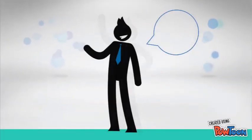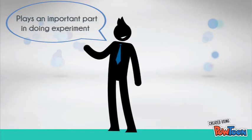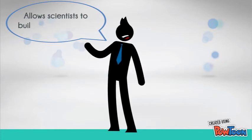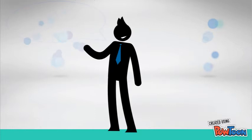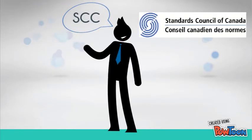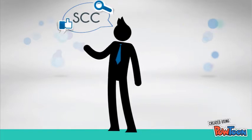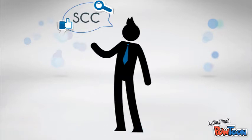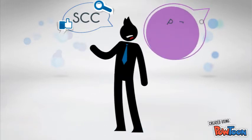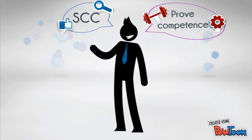Good laboratory practice plays an important part in doing experiments. It allows scientists to build a good report within the scientific community. The SCC, Standards Council of Canada, is the only monitoring authority in Canada that recognizes good practice and gives accreditation to scientists. Having been certified means you are competent and can follow internationally set guidelines. It proves your work is credible.